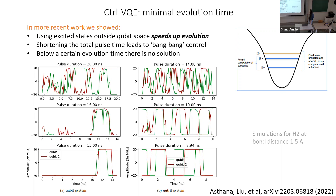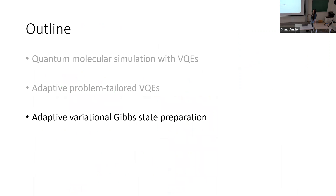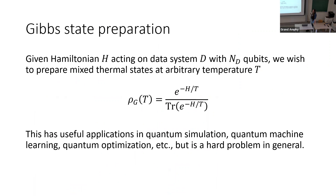There are a number of other ways of improving on these ADAPT-VQE procedures, including ADAPT-QAOA for solving problems like max cut on graph states. Moving on to my own work with postdoc Linghua Zhu on adaptive variational quantum algorithms for Gibbs state preparation: given some Hamiltonian H acting on a data system D of Nd qubits, we want to prepare not a pure ground state but a mixed thermal state at arbitrary temperature T.